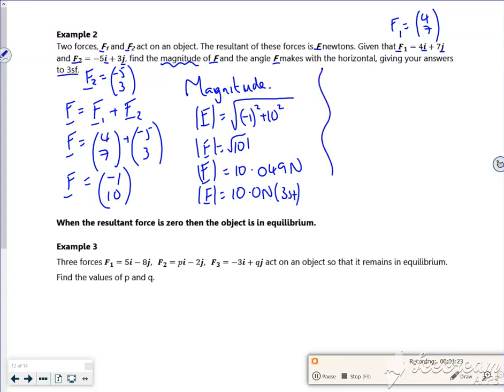And the angle it makes - so (-1, 10) is going across 1, or minus 1, and then going up 10. So tan θ is opposite over adjacent, so 10 over 1 gives θ as 84.3 degrees.